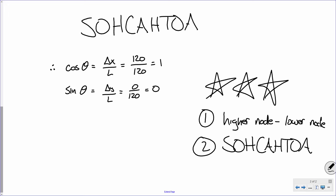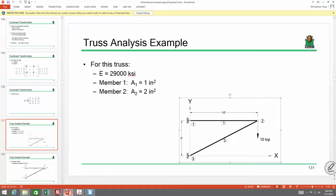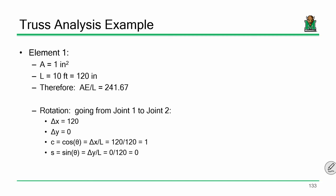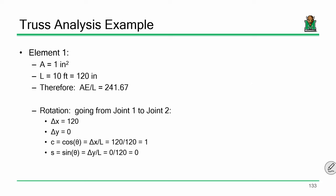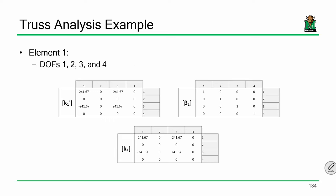So if I go back to the original problem: for element number one, delta x is 120 and delta y is zero. That's how I calculate sines and cosines. The rotation matrix — plugging in sines and cosines — is the identity matrix because the member is horizontal. This local stiffness matrix times the identity transpose times the identity gives the global, which just happens to equal the local stiffness matrix. We'll go through that matrix math in Excel next time.